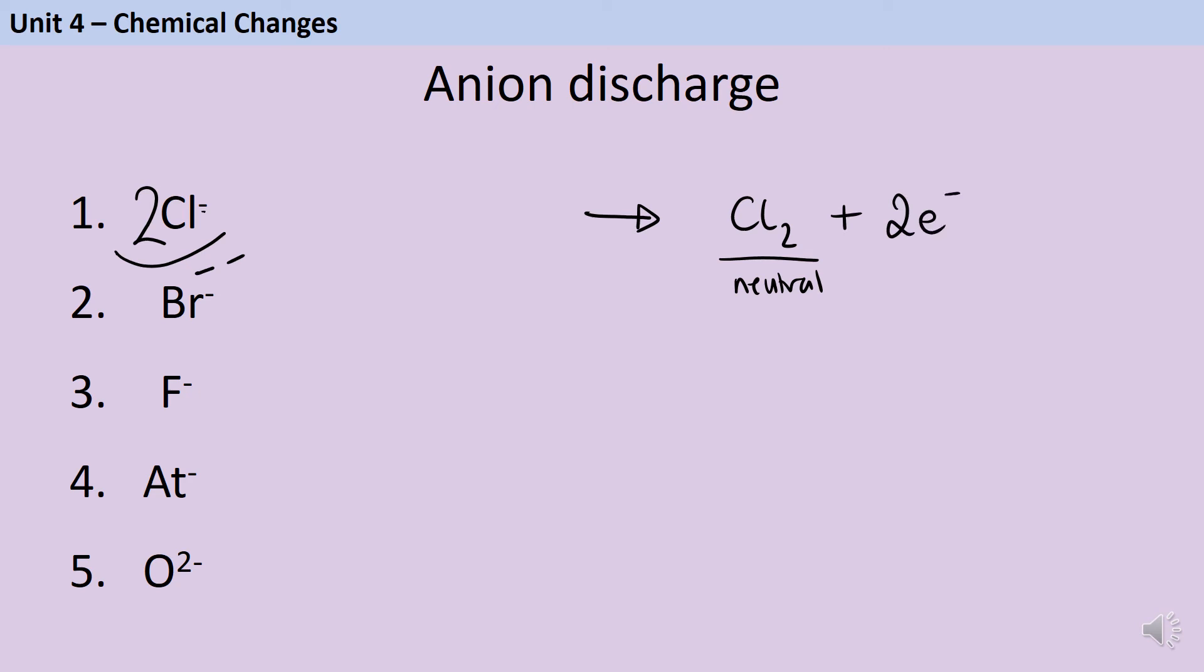If we look at bromine, we're going to do something very similar. So bromine, again, exists as diatomic molecules. And so because there's two of them here, I'm going to need two bromide ions to start with, and therefore I'm going to need two electrons over here. Pause the video and have a go at the last three. Number five is quite tricky.